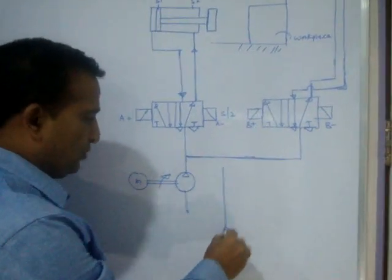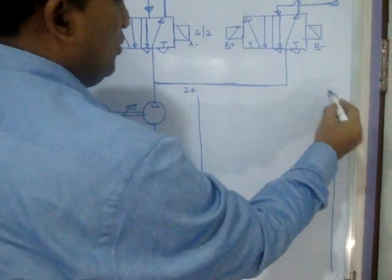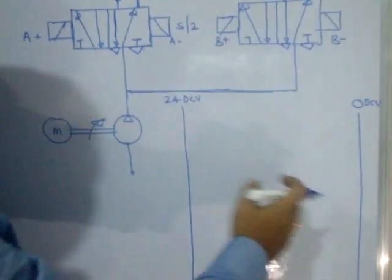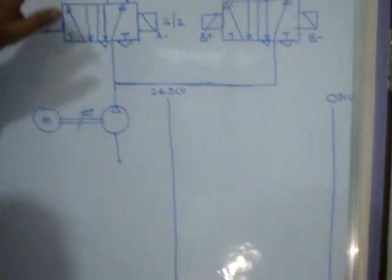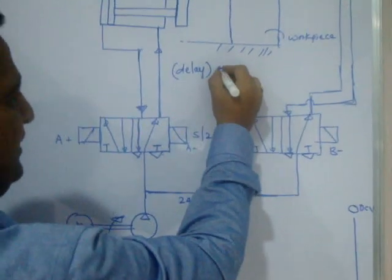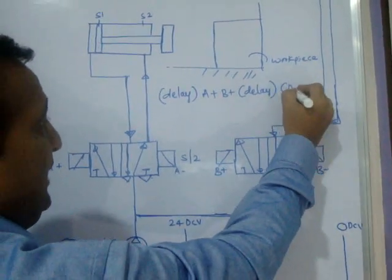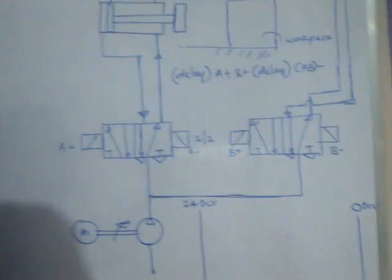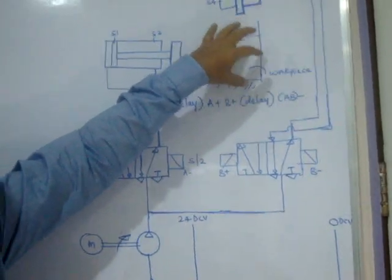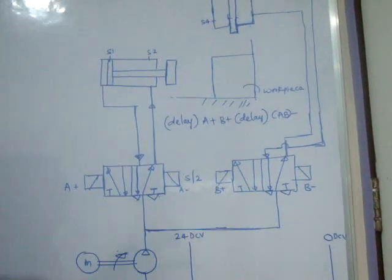Now I am writing the PLC ladder program. The two rails are: 24V DC on one side and 0V DC on the other. Current flows from the 24V rail to the 0V rail. The first requirement in the sequence is a delay. This delay is needed to allow time to place the workpiece — it could be 10, 20, or 30 seconds depending on the application.